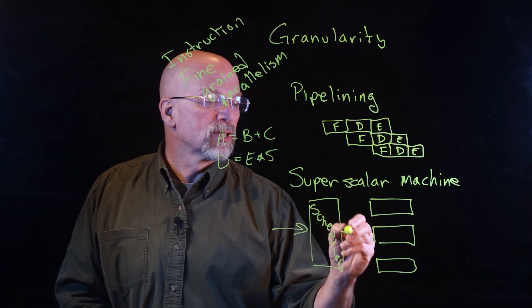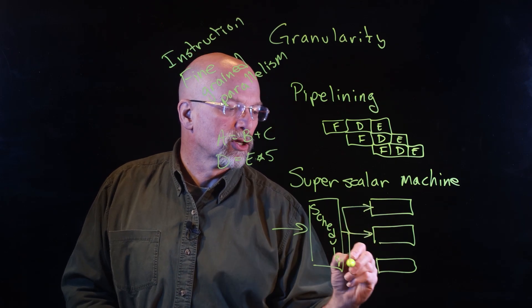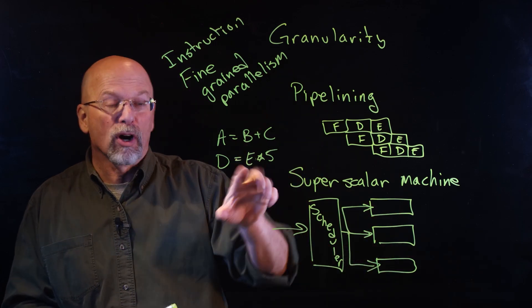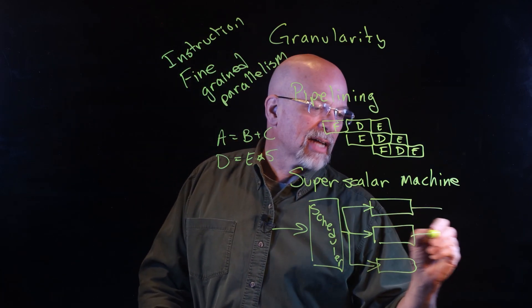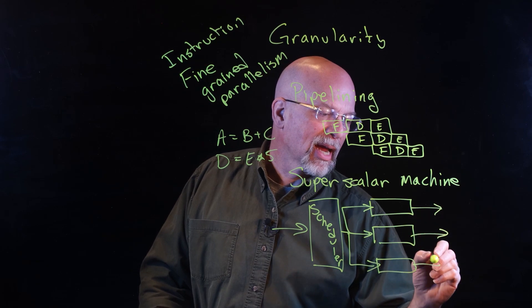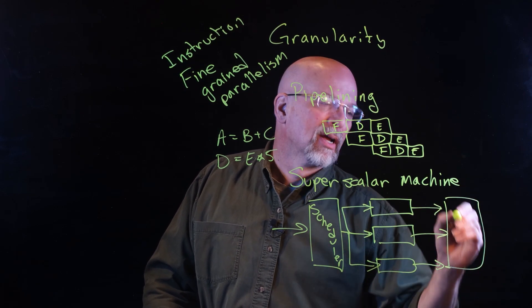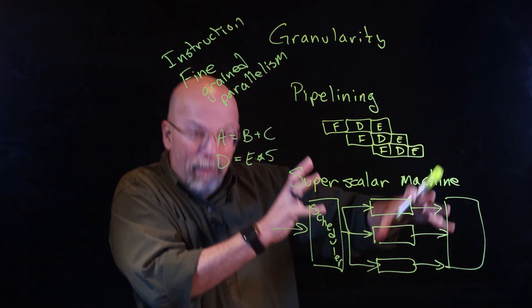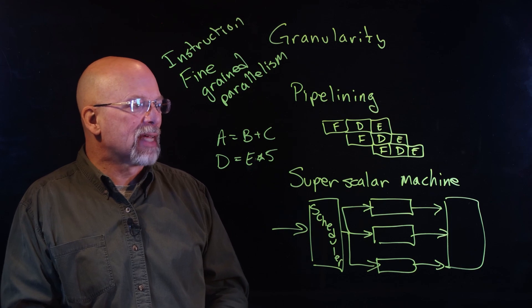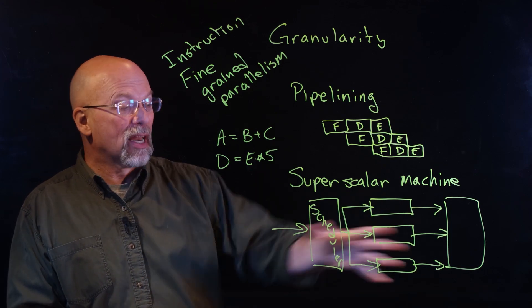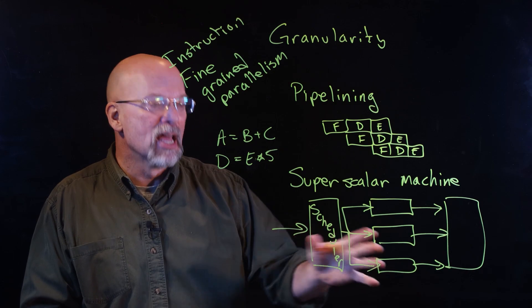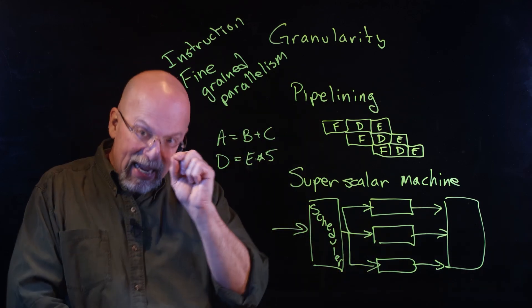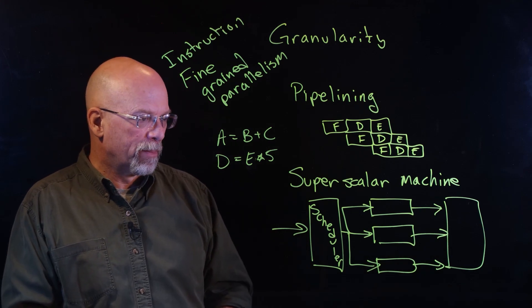What the scheduler can do is it can say, I am going to activate two of these pipes to work on these two instructions. Then you've got some mechanism to bring everything back together so that we can keep everything operating exactly the way the programmer intended. This is internal to the CPU, like pipelining. We're talking about instruction-based fine-grained parallelism.